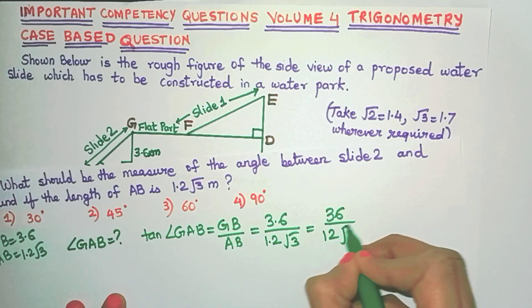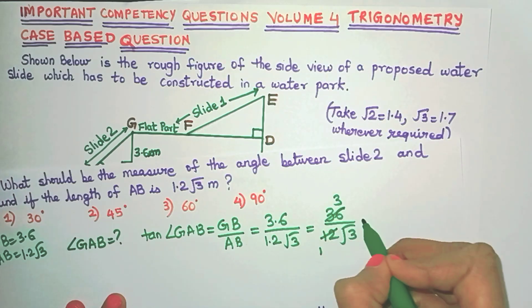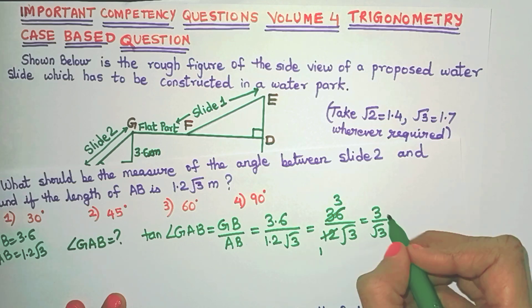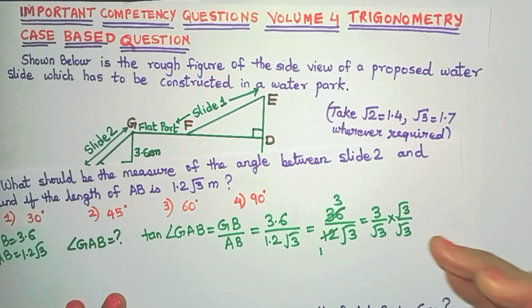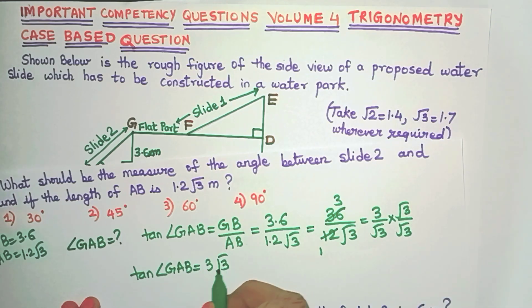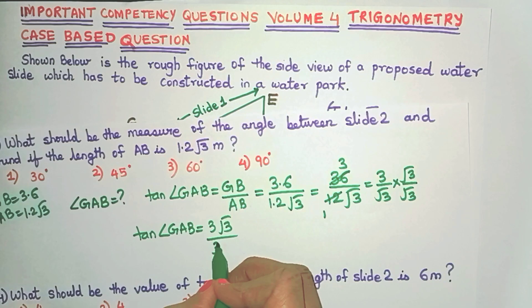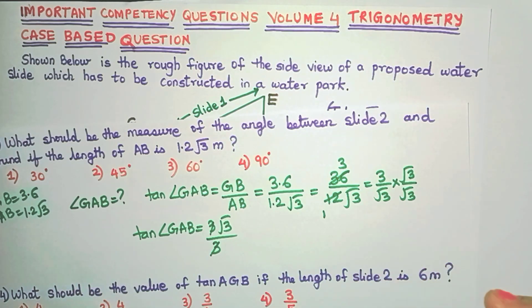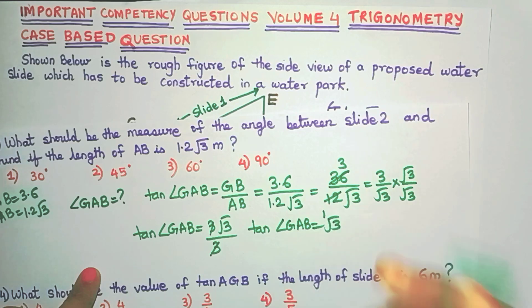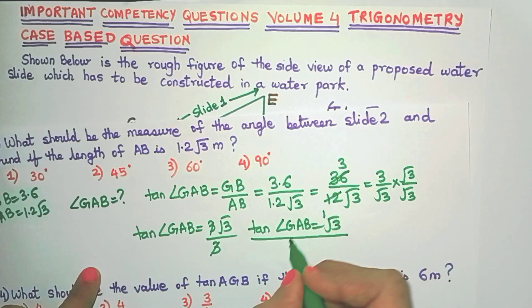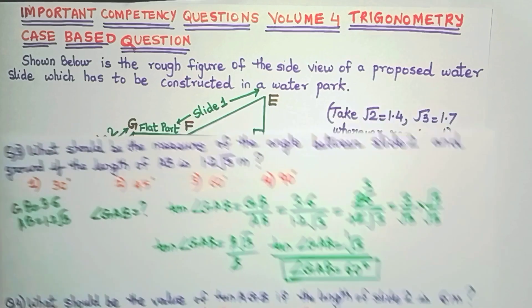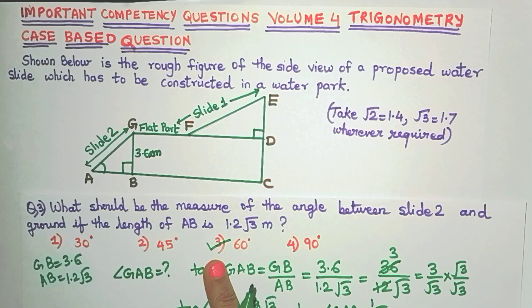Removing the decimal: 36 / 12√3 = 3/√3. Now we rationalize the denominator: tan(GAB) = 3/√3 × √3/√3 = 3√3/3 = √3. Since tan 60° = √3, angle GAB is 60 degrees. The third option is correct.